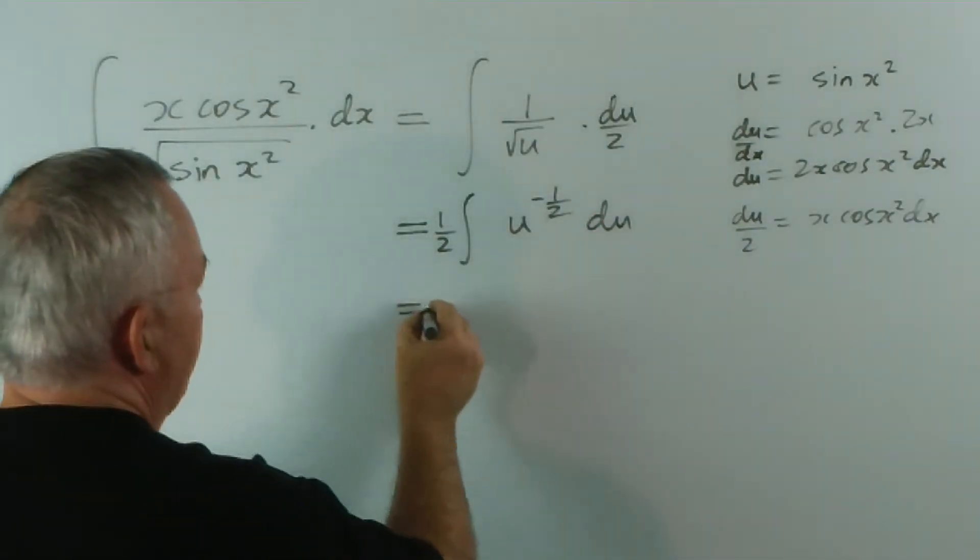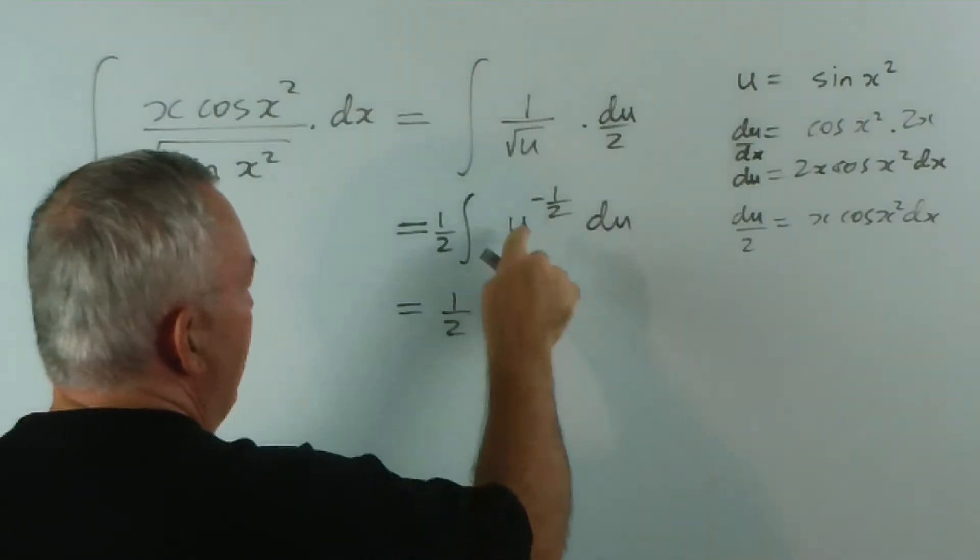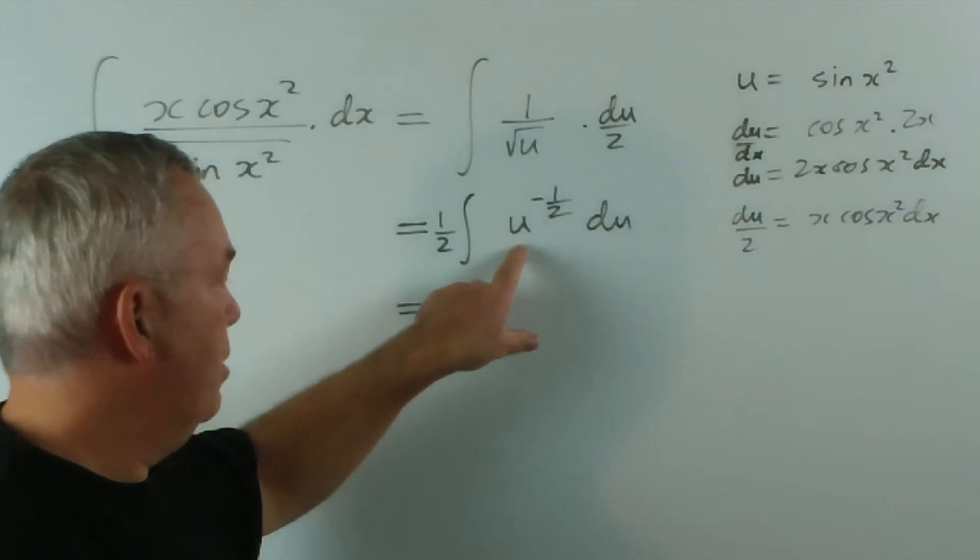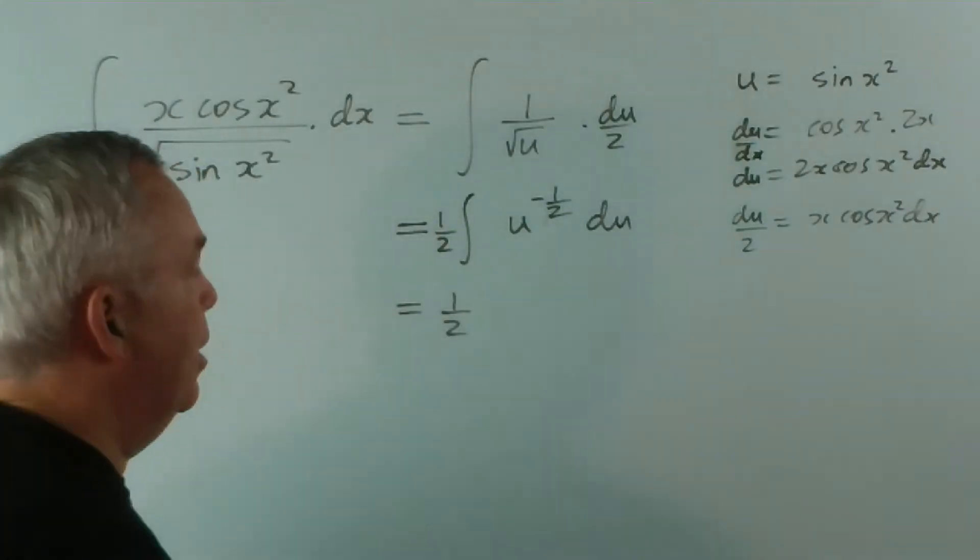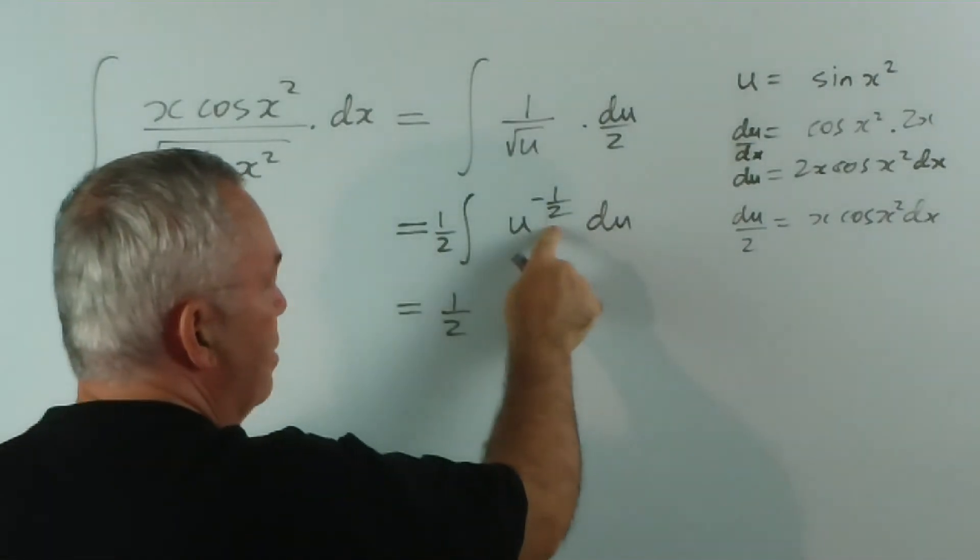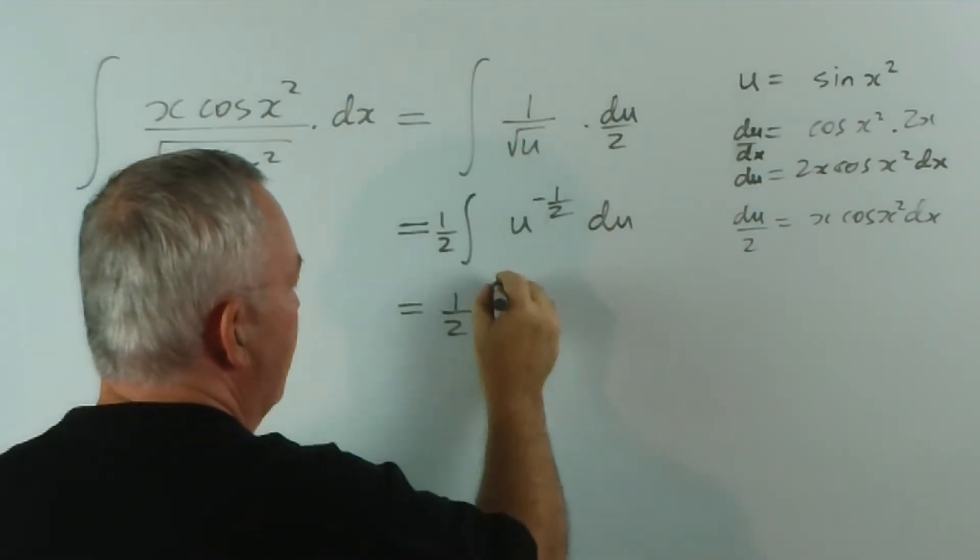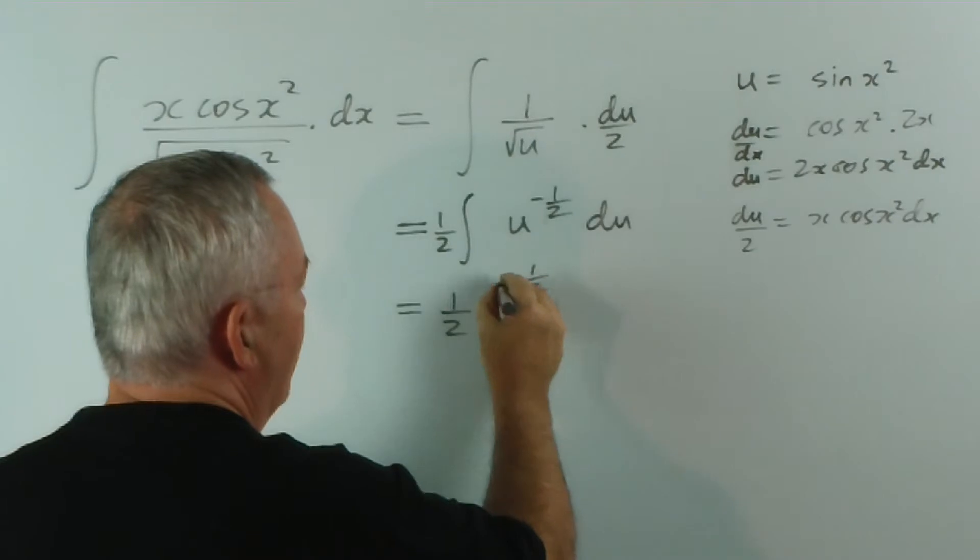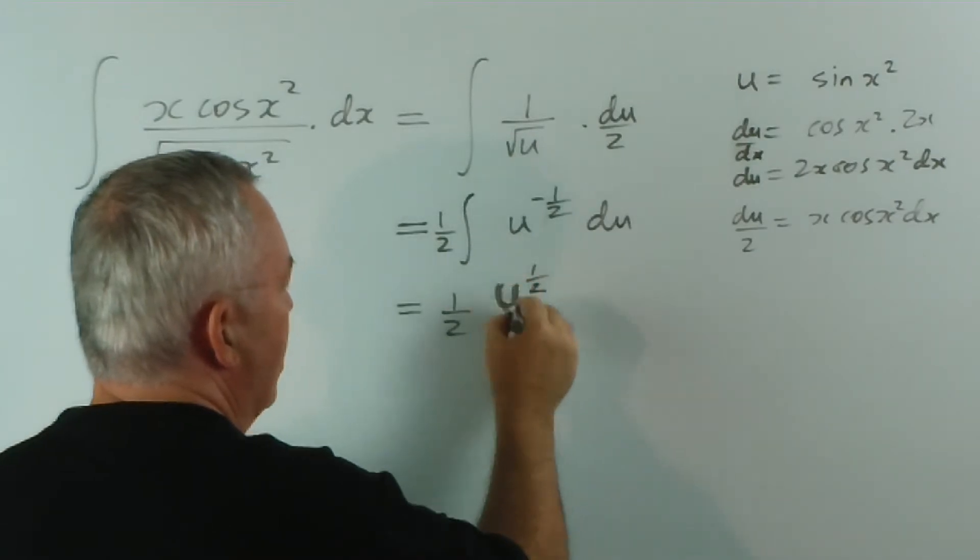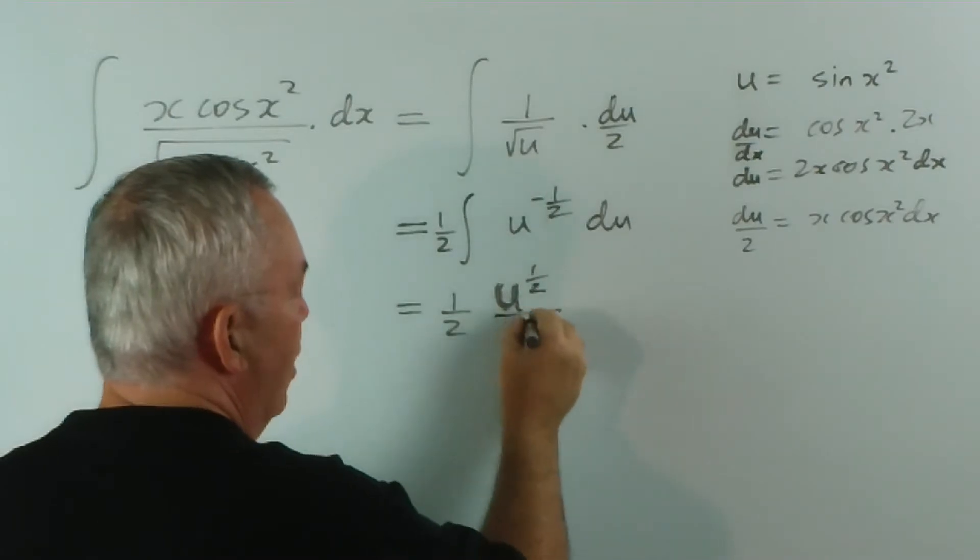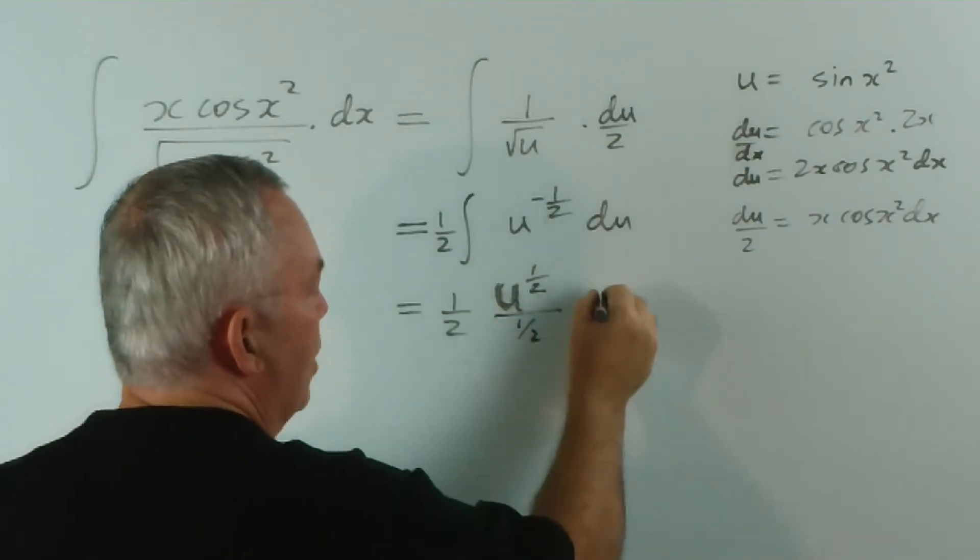And now we can integrate. Leave the half here. The integral of this... remember, when we have a power of u, or a power of x, we increase the power by 1, so minus a half plus 1 is plus a half. So it's u to the half divided by a half plus c.